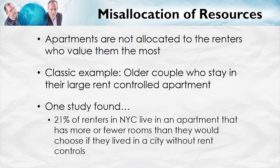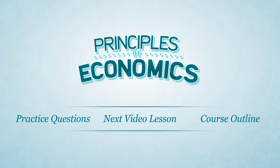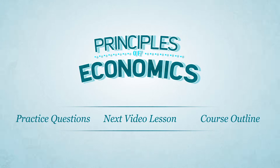One study found that 21% of renters in New York City live in an apartment that has more or fewer rooms than they would choose if they lived in a city without rent controls — so the apartments become misallocated. That's it for price ceilings. Next time we'll be looking at price floors, a price below which it is illegal to go. If you want to test yourself, click practice questions, or if you're ready to move on, just click next video.